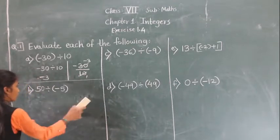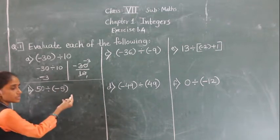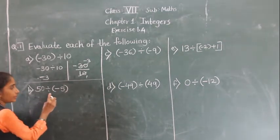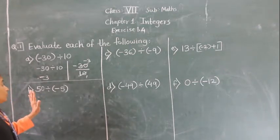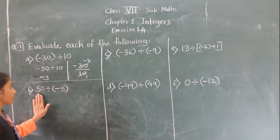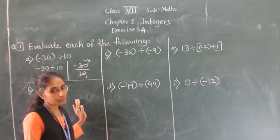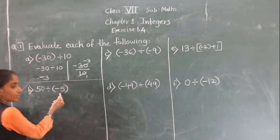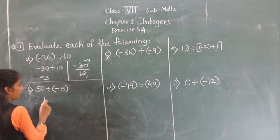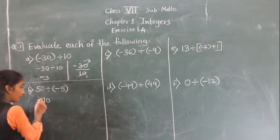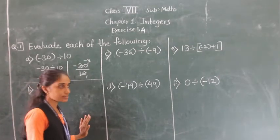Here is one more method: 50 divided by minus 5. When we divide a positive integer by a negative integer, we divide them as whole numbers — 5 tens are 50 — and put a minus sign before the answer. Both ways give the same result.